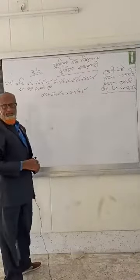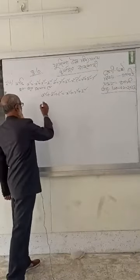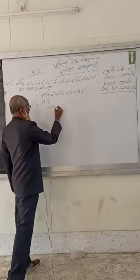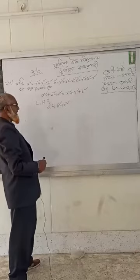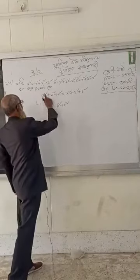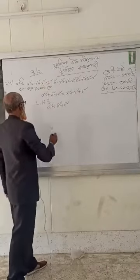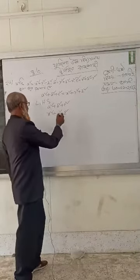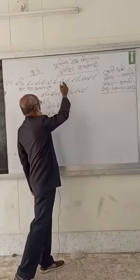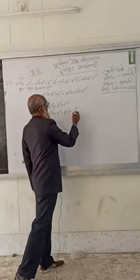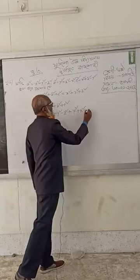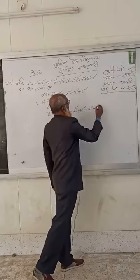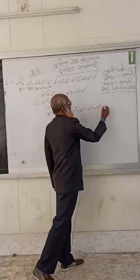Left hand side is equal to A square plus B square plus C square. Now, I am going to substitute: A square is equal to X square plus Y square minus Z square. B square is equal to Y square plus Z square minus X square. And C square is equal to X square plus Z square minus Y square.